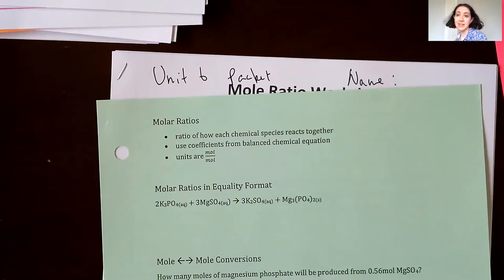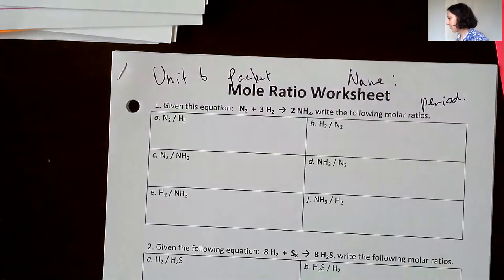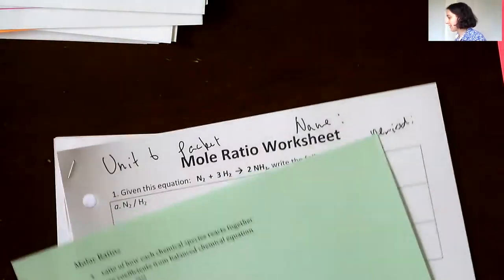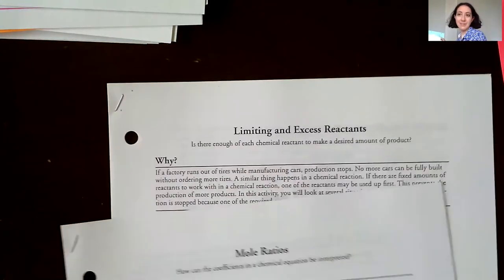The next thing is unit six. This is stoichiometry, which is kind of a fancy way of saying ratios. Again, we'll learn about it. So you've got your notes and your unit six packet and two more POGILs. So there you go.